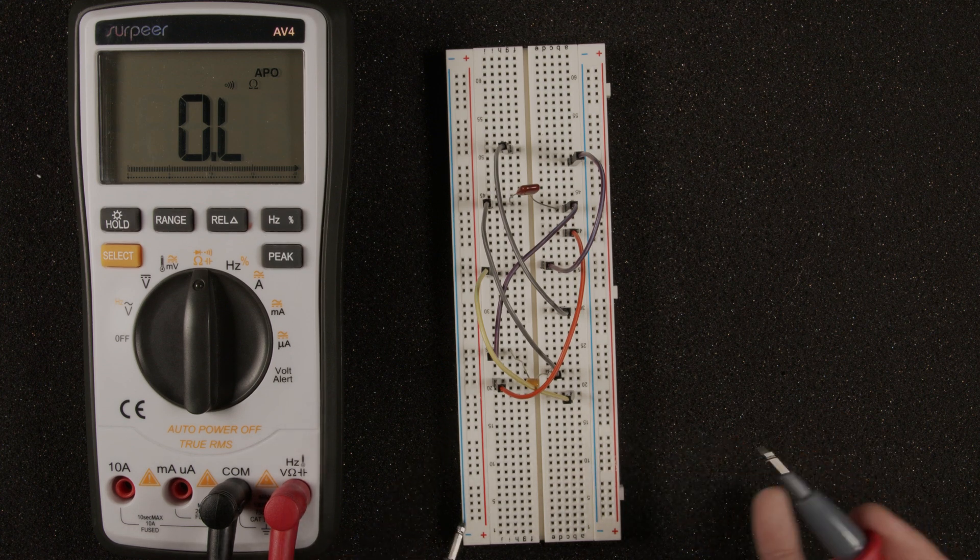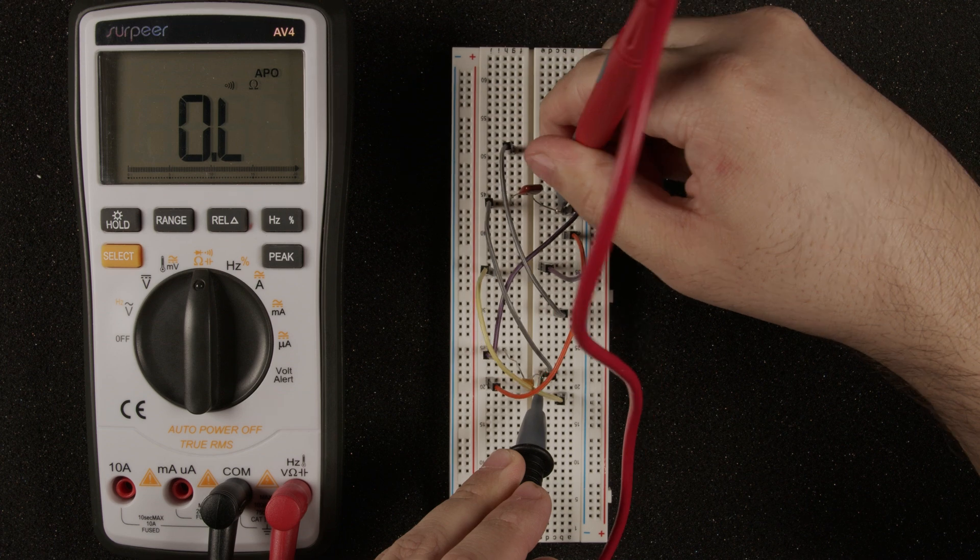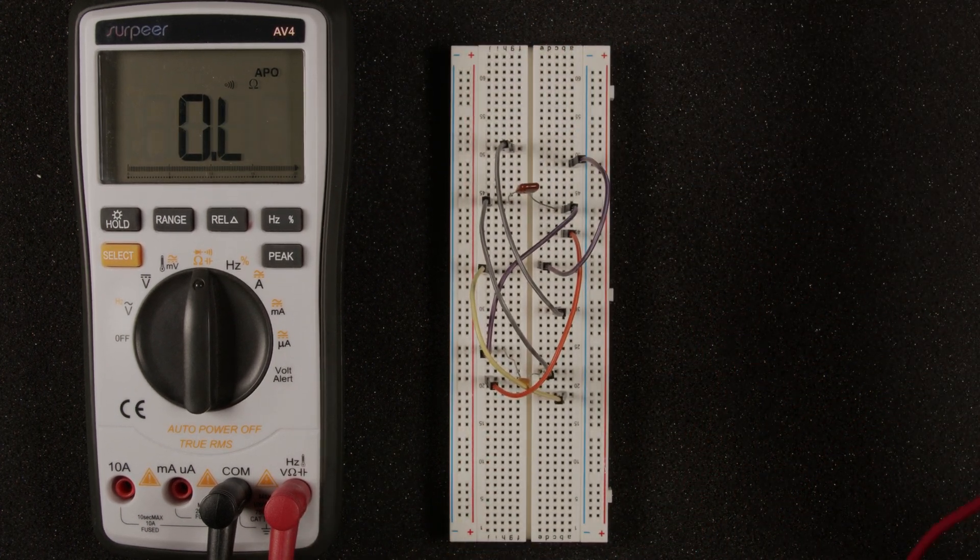Now we can probe our circuit to see if any two things are connected. So we can probe here, and probe here, that is not. If I probe over here, that is connected.